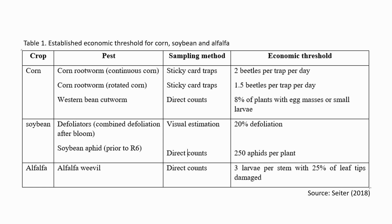For alfalfa weevil, the established economic threshold is 3 larvae per stem with 25% of leaf tips damaged, assessed through direct counts. These thresholds are the insect densities where necessary actions should be taken so as to prevent them from reaching EIL, which might be slightly higher than these, as already discussed.